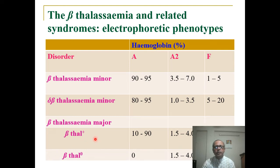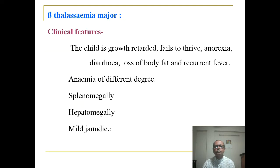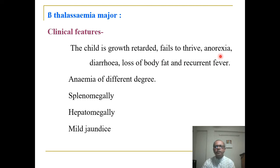We have to know about beta-thalassemia major in detail, as there are also viva questions regarding it. Clinical features of beta-thalassemia major: it usually occurs in children. The child is growth-retarded and fails to thrive, with anorexia, diarrhea, loss of body fat, and recurrent fever. There is varying degrees of splenomegaly, hepatomegaly, and mild jaundice.